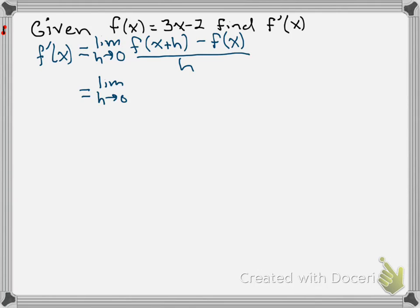F of x plus h is our linear function with x plus h plugged in for x, so 3 times the quantity x plus h minus 2, minus, and now this second function you should always put in a set of parentheses,